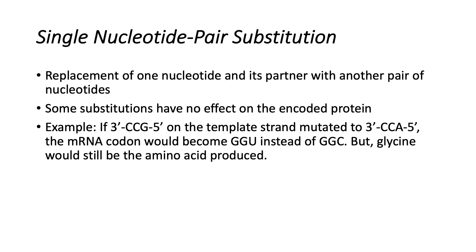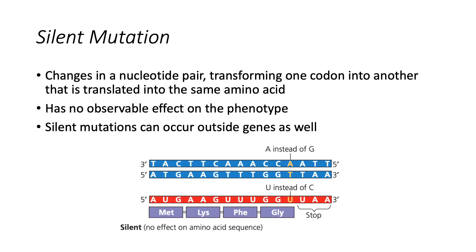A nucleotide pair substitution is the replacement of one nucleotide and its partner with another pair of nucleotides. Some substitutions have no effect on the encoded protein owing to the redundancy of the genetic code. For example, if a 3' CCG 5' on the template strand mutated to 3' CCA 5', the mRNA codon that used to be GGC would become GGU, but a glycine would still be inserted at the proper location in the protein. In other words, a change in a nucleotide pair may transform one codon into another that is translated into the same amino acid.